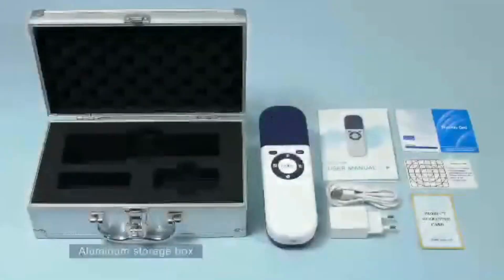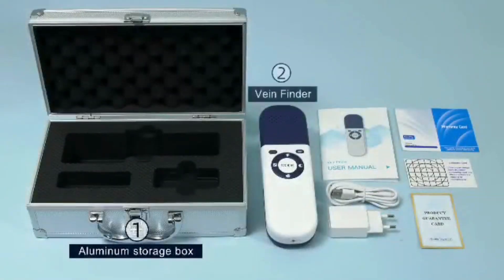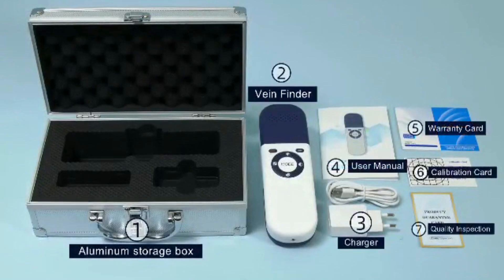The standard configuration consists of aluminum storage box, VeinFinder, and charger.